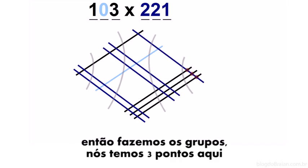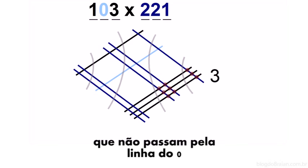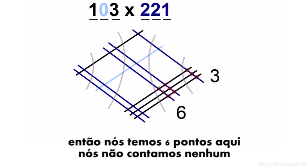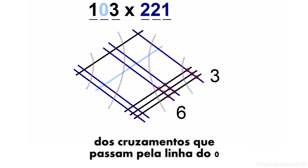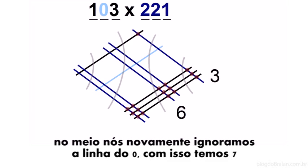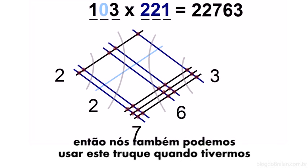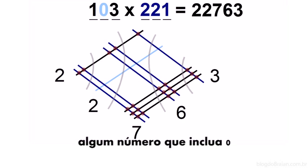So when we make the grouping, we have three dots here. For the second arrangement, we're only going to count the dots for the non-zero lines. So we have six dots here. We don't count any of the intersections for the zero line. In the middle, we again ignore the zero line, which makes seven. Here we have two dots and two dots here. So you can even use this method when you have a number that includes zero.